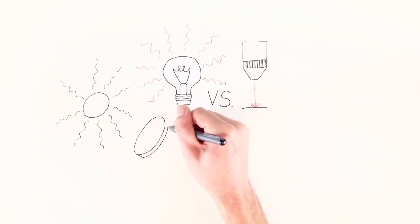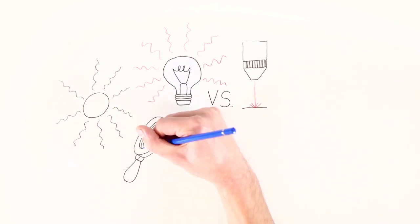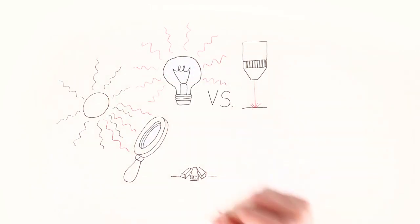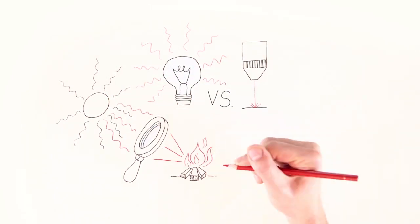The light bulb radiates in all directions, whereas the beam of the laser is directed. Laser light is coherent, so the wavetrains are much longer than those from a light bulb.